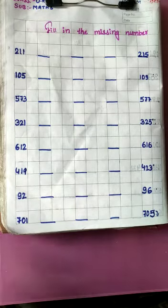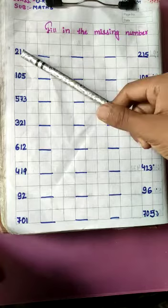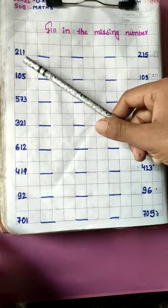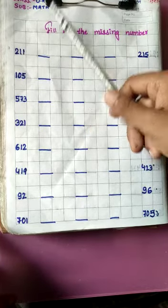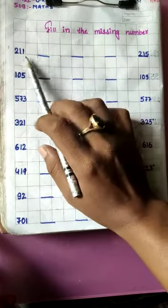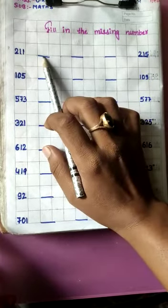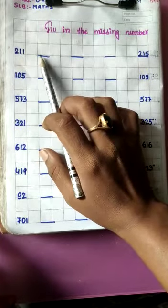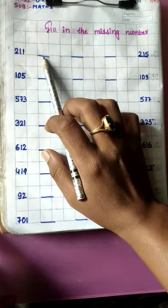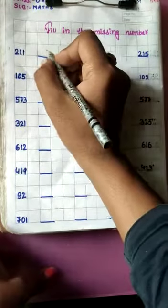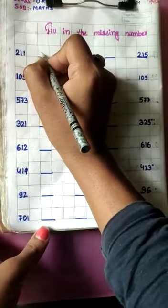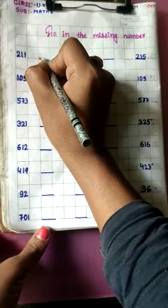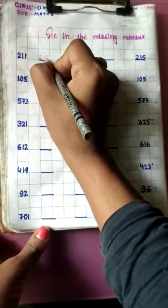Tell me kids — 211. Now 211 is already written. After 211, which number is missing? 212. Now write down here: 212.